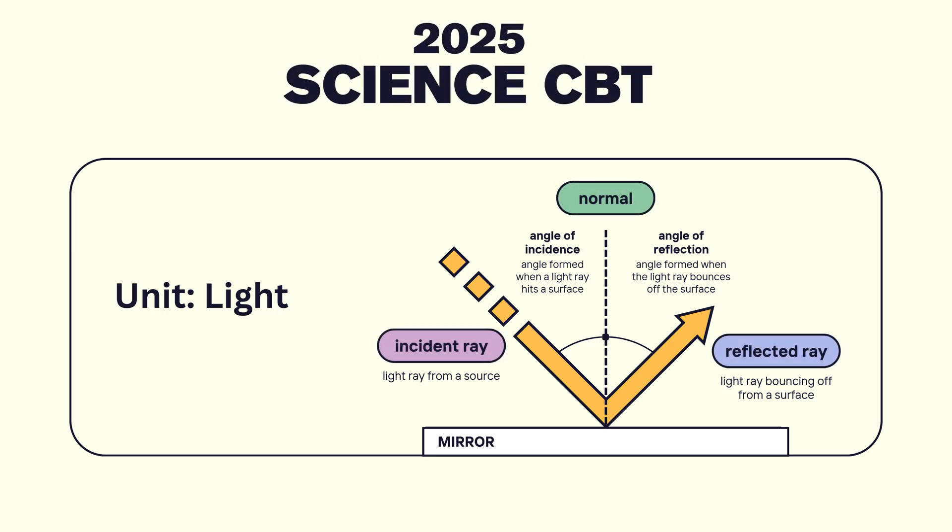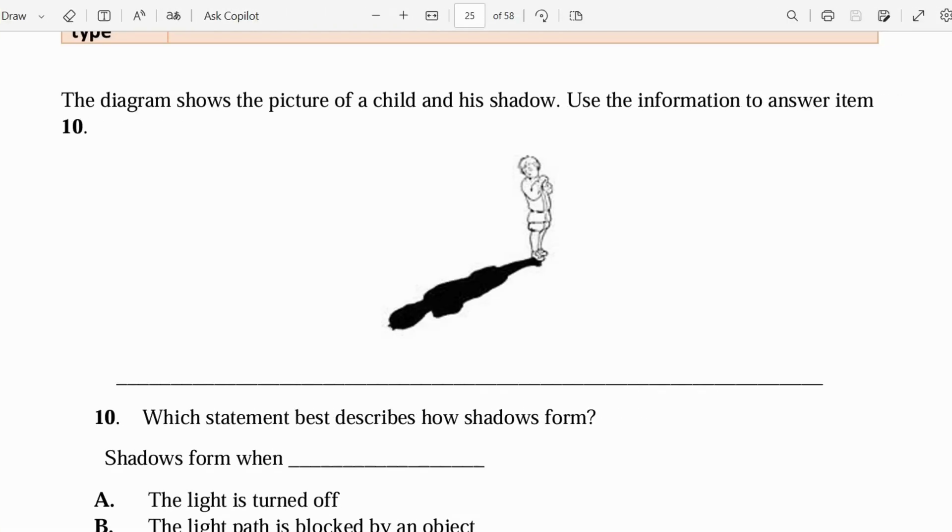2025 science CBT. In today's video, we're going to be looking at the light unit, so let's get right into the questions. I know you have your exams very soon, so we want to get out as much material as possible. Number 10 says the diagram shows the picture of a child and his shadow. Use the information to answer item 10.